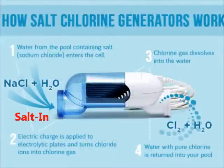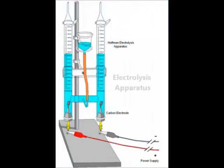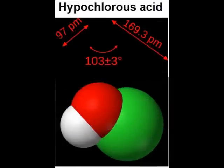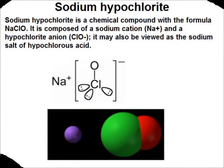The chlorine generator, also known as a salt cell, uses electrolysis in the presence of dissolved salt in pool water to produce hypochlorous acid and sodium hypochlorite.